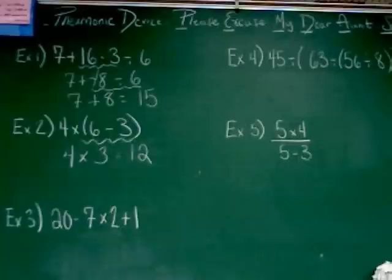Alright, let's go down to example 3. 20 minus 7 times 2 plus 1. 20 minus 7 times 2 plus 1.